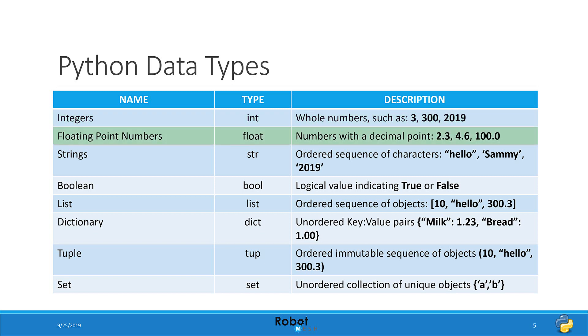Then we have floating point numbers, which are decimal numbers, or numbers that contain a fractional value, such as 2.3, 4.6, 100.0. Now notice here, even if you have 100.0, it still counts as a floating point number, and that's because of the decimal portion of the value.